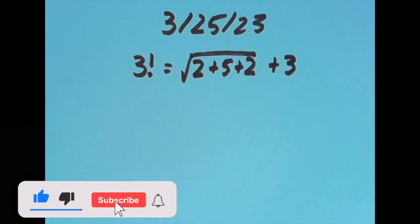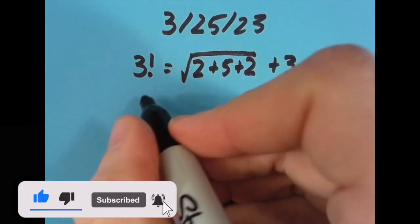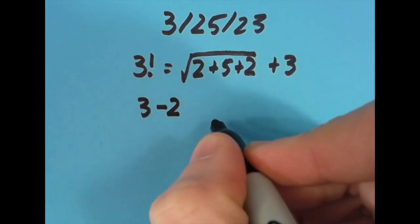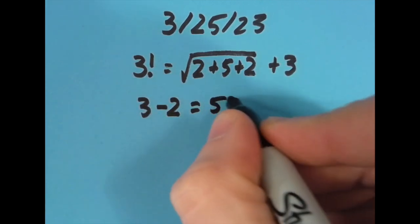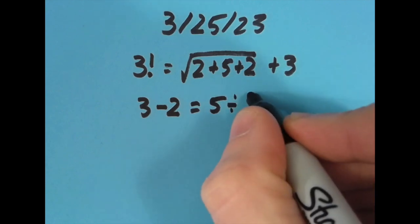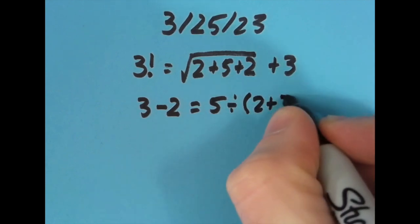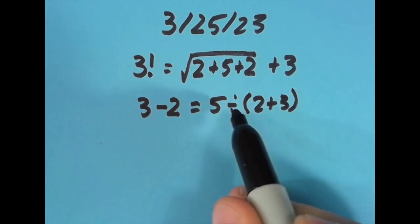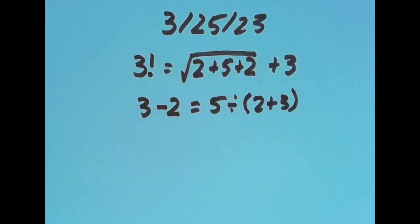That's what I did, but I tried it with the equal sign in different spots. If we move the equal sign a spot to the right, I said that 3 minus 2, which is 1, is equal to 5 divided by—I want to divide it by all of 2 plus 3, so I need to do this addition first. 2 plus 3 is 5, 5 divided by 5 is 1, just like 3 minus 2 is.